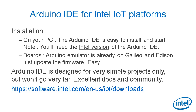First, Arduino IDE for Intel IoT platforms. Installation on your PC is very easy — just download the software and run it. It works on Mac, Windows, and Linux. You'll need the Intel version of the Arduino IDE; do not try to run the regular Arduino IDE with Galileo or Edison. On the board itself, the Arduino emulator is already installed on Galileo and Edison by default. Just update the firmware to the recent version. That's all you need.